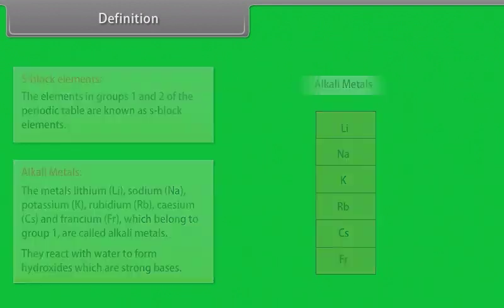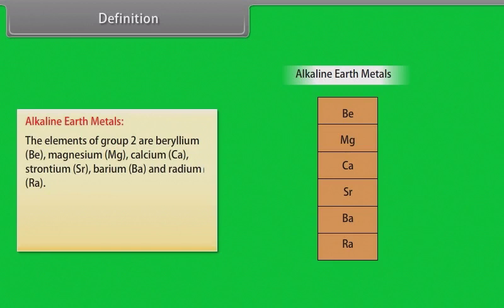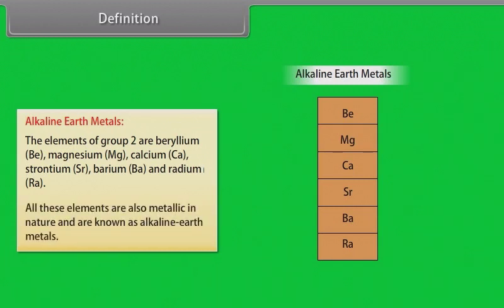They react with water to form hydroxides, which are strong bases. Alkaline earth metals: The elements of group 2 are beryllium, magnesium, calcium, strontium, barium and radium. All these elements are also metallic in nature and are known as alkaline earth metals.